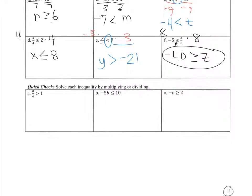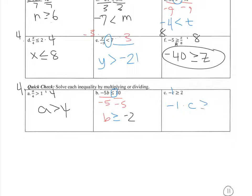Okay, a few more — three more. Problem a: I'm dividing by a positive 4, so I'm going to multiply both sides by a positive 4. It still doesn't change the direction. Problem b: I'm dividing by a negative 5, so this is going to change to greater than or equal to. Negative 10 divided by negative 5 is negative 2. Now this negative c is actually a negative 1 times c. So to solve for c, you have to divide by negative 1, which is going to change this greater than or equal to, to less than or equal to.